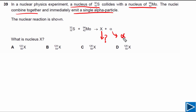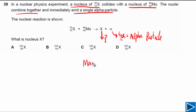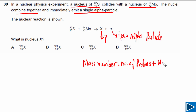The question is asking us to find out what this nucleus is. The symbol shown is for an alpha particle — only one alpha particle is emitted in this nuclear reaction. An alpha particle has atomic number 2 and mass number 4. Mass number is equal to the number of protons plus the number of neutrons in the nucleus.